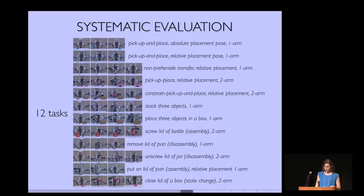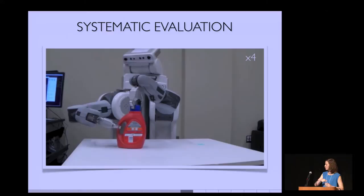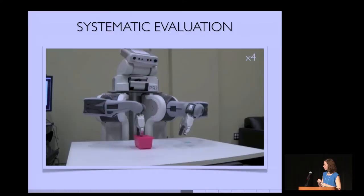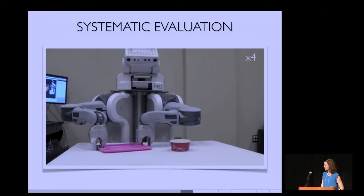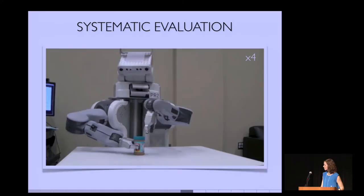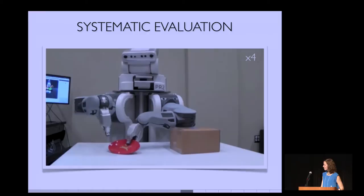And also we wanted to capture whether one or two arms were used, and whether the manipulation actually involved picking up the object or it was non-prehensile. So we came up with this benchmark that had 12 tasks that sort of captured the combination of these factors that I just mentioned. So let me show you some examples from that benchmark. I didn't put all of them. This is assembly. State change. Multi-object. This is two arm pick up and place. Disassembly. All right.